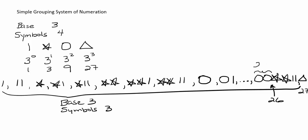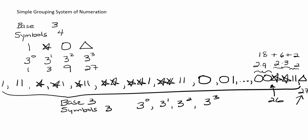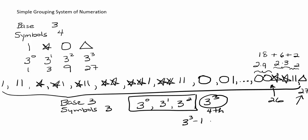Let's confirm: 2 circles is 2 times 9, or 18; 2 stars is 2 times 3, or 6; and 2 ones is 2. So 18 plus 6 plus 2 equals 26. To find the highest value in a base-3 system with 3 symbols, note that a 4th symbol would represent 3 cubed, or 27. So the most representable with the previous symbols is 3 cubed minus 1, which equals 26.